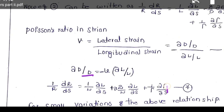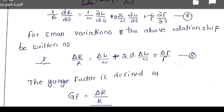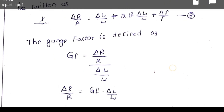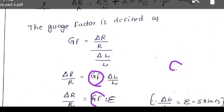For a small variation, the above relationships can be written as dou R by R. For a small variation in the above equation: delta R by R. The gauge factor is defined as delta R by R divided by delta L by L. From that, delta R by R can be written as gauge factor into delta L by L. Delta L by L is known as epsilon, where epsilon is known as strain.